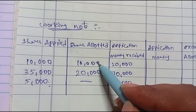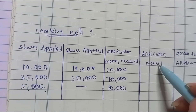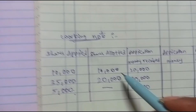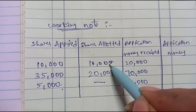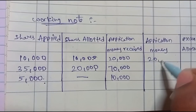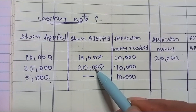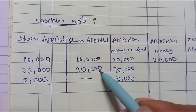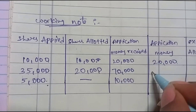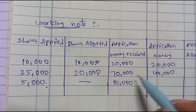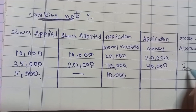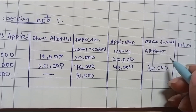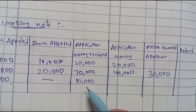We have 10,000 shares receiving full allotment, 20,000 shares transferred from the 35,000 application group, making a total of 30,000 shares allotted. The application money needed for 30,000 shares at 2 rupees is 60,000. From the 70,000 received in the 35,000 group, only 40,000 is needed for application; the excess is 30,000. That excess 30,000 is used toward allotment. The 5,000 rejected shares had 10,000 received, which is refunded.